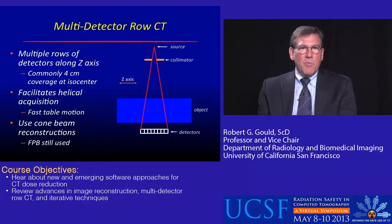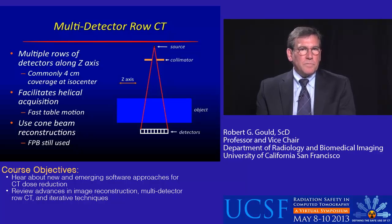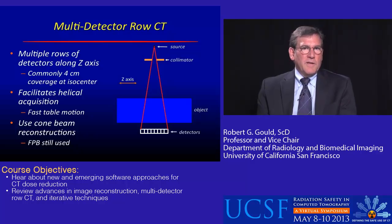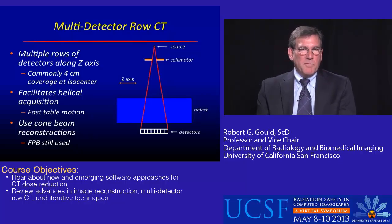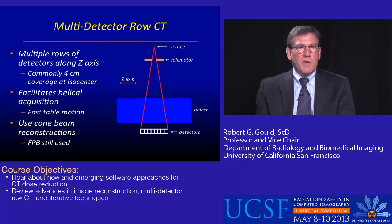The next important development was multi-detector row CT. Along the z-axis, we now have a whole series of detectors rather than just a single detector. This facilitates helical acquisition because the table can move extremely fast.